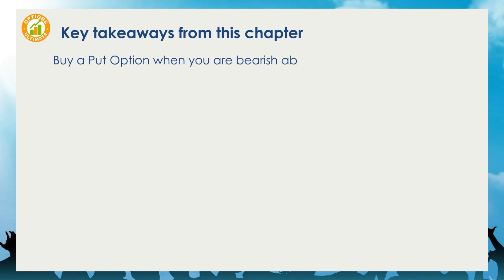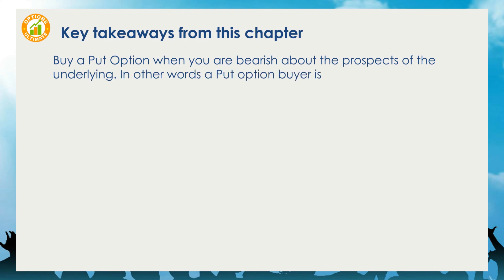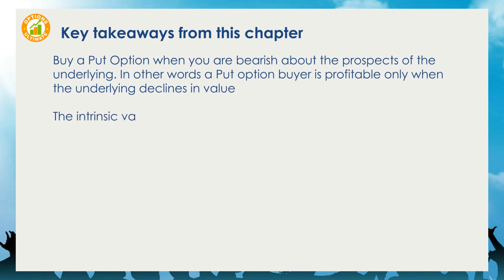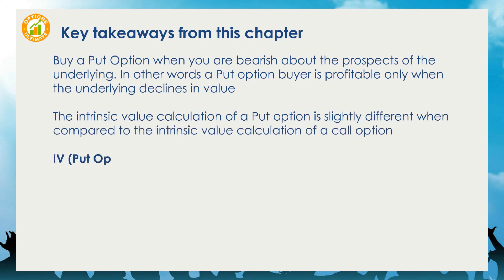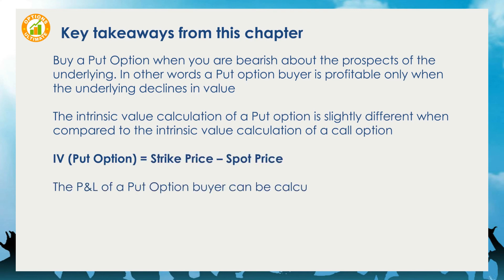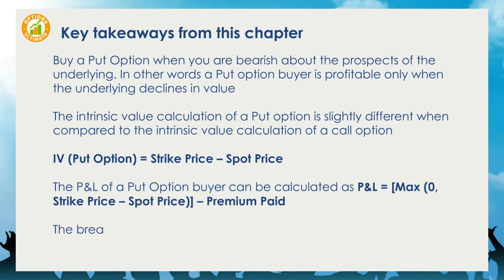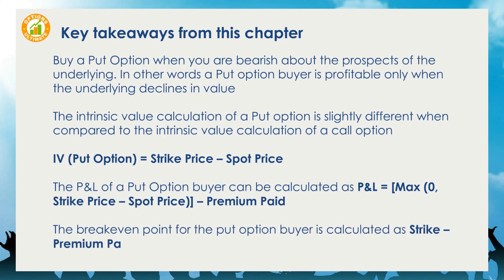To summarize: buy a put option when you are bearish about the prospects of the underlying — a put option buyer is profitable only when the underlying declines in value. The intrinsic value of a put option = strike price minus spot price. The P&L of a put option buyer = Max(0, strike price minus spot price) minus premium paid. The break-even point for the put option buyer = strike price minus premium paid.